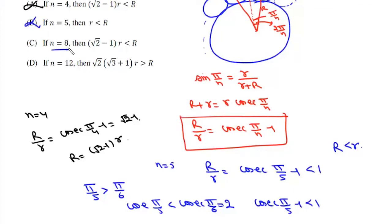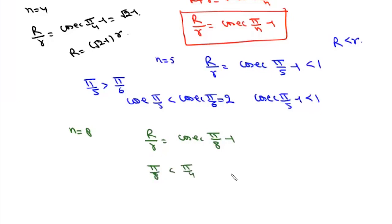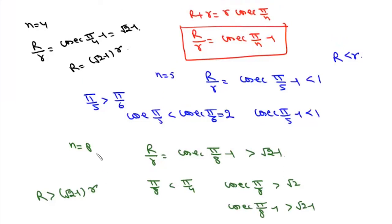For option C, we take n = 8. We can write r/R = csc(π/8) − 1. Now π/8 is less than π/4, so csc(π/8) is greater than csc(π/4) = √2. Therefore csc(π/8) − 1 is greater than √2 − 1. So for n = 8, r should be greater than (√2 − 1)·R. Option C is correct.